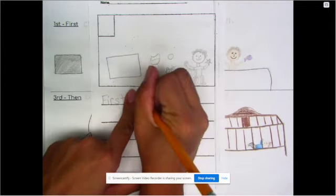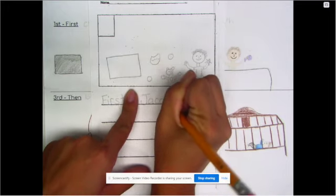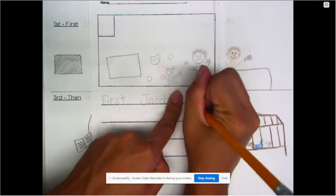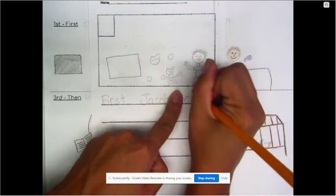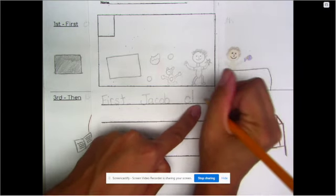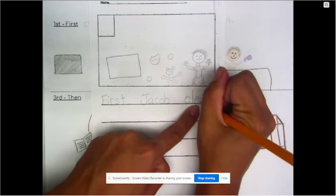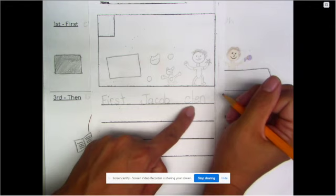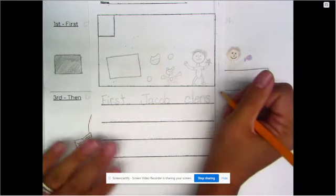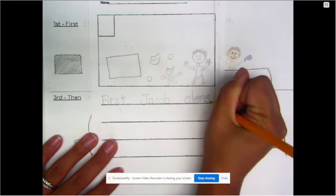So Jacob, finger space. I know how to spell Jacob already. Jacob, finger space, cleans. And what comes at the end of a sentence? A period. Yes. Ending punctuation. And because I'm telling you something, it's a period.